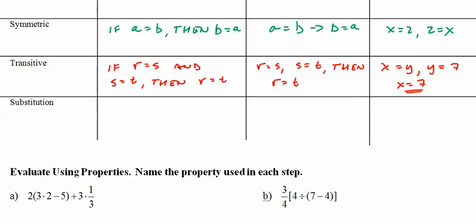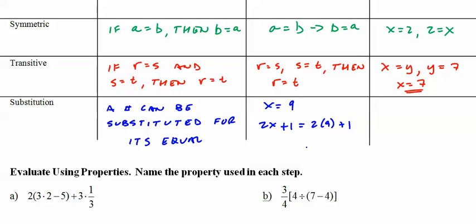And substitution. Kind of the transitive thing. A number can be substituted for its equal. So X equals 9. 2X plus 1 equals 2 times 9 plus 1. Get the general idea.